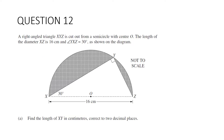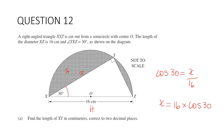Question 12: a right-angled triangle XYZ is cut from a semicircle of centre O. The diameter XZ is 16 centimetres and angle YXZ is 30 degrees. Find the length XY to two decimal places. This is basic trigonometry. The hypotenuse is 16 and XY is adjacent, so we use cosine. Cos 30 equals XY over 16, so XY equals 16 times cos 30. Using the calculator, that's 13.856, which rounds to 13.86 centimetres.